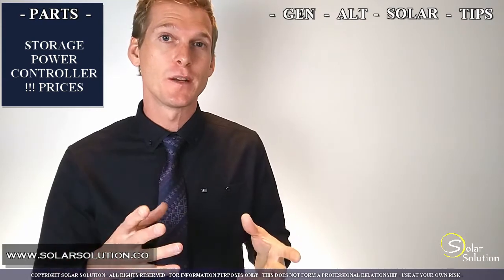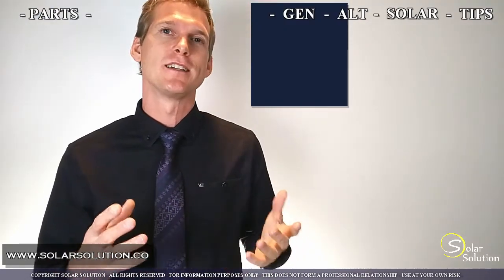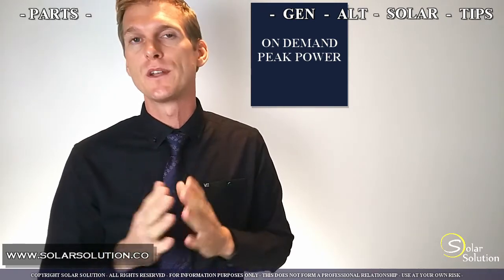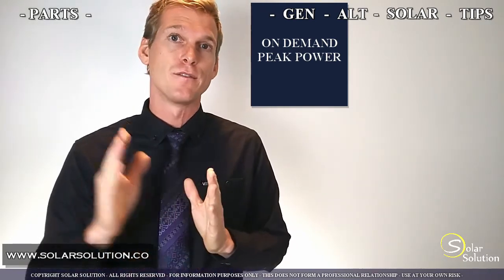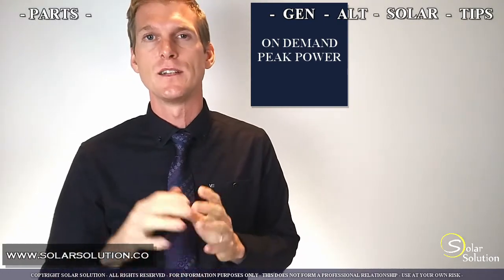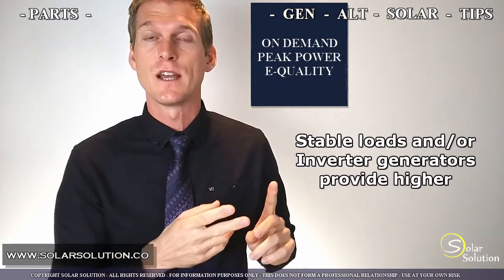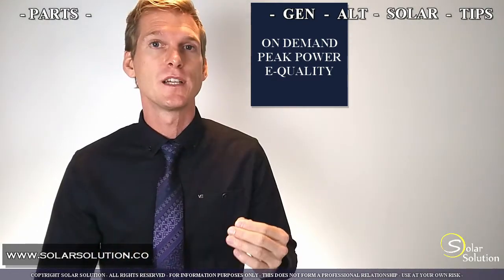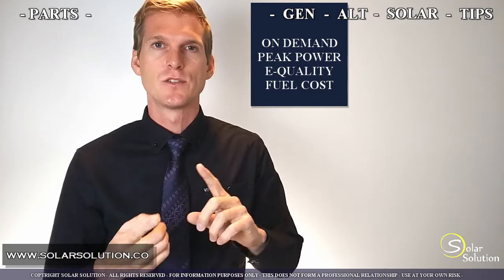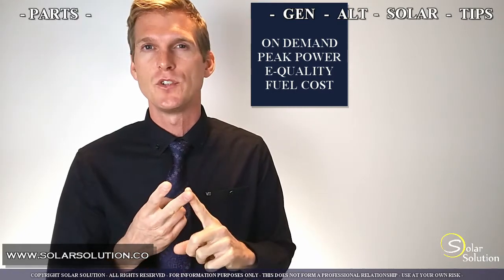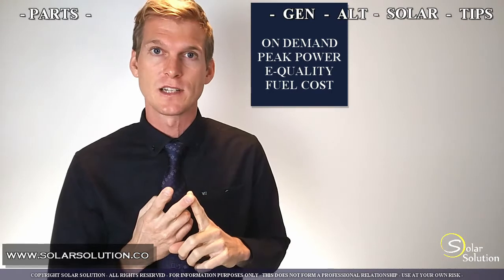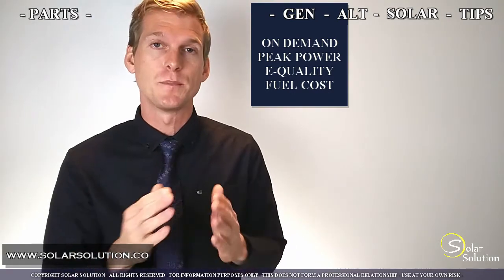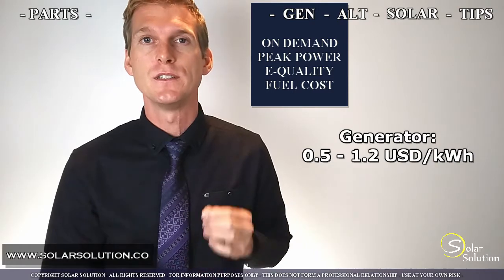Let's look at the generator first. The generator has a great advantage — you can just push a button and have power available right away, and you can run it 24 hours a day. Power quality depends on your load type: with varying loads on a conventional generator you get lower power quality, whereas with an inverted generator or stable loads the power quality will be much higher. To give you prices for fuel consumption I'll make a few assumptions: I'm using fuel prices from North America, assuming a residential generator fueled by gasoline within a capacity range of 1 to 10 kilowatts.